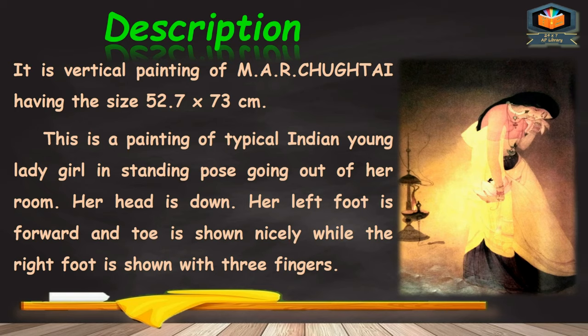It is a vertical painting by M.A. Chughtai having the size 52.7 centimeters in width and 73 centimeters in length. This is a painting of a typical Indian young girl in a standing pose, going out of her room. Her head is down, her left foot is forward and the toe is shown nicely, while the right foot is shown with three fingers.